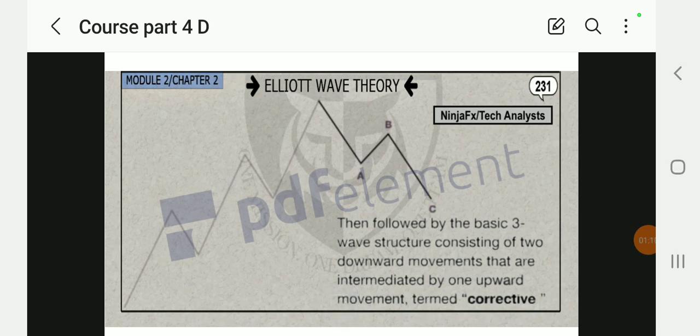Then followed by the basic three-wave structure consisting of two downward movements that are intermediated by one upward movement termed corrective, as you can see. From the top, there was a motive, then from A to B was a corrective, from B to C was a motive. In this case, the market reversed. You can see a head and shoulders reversal pattern. If you're familiar with drawing the neckline, you can see it broke the neckline. This is the corrective part where A-B is the corrective part.